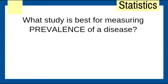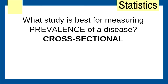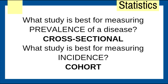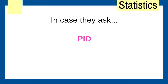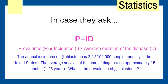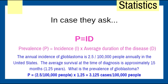What study is best for measuring prevalence? Cross-sectional. Best for measuring incidence? Cohort — we track outcomes and new cases. Remember PID: P equals I times D. Prevalence equals incidence times average duration of the disease. You can use incidence and average duration of disease to calculate prevalence.